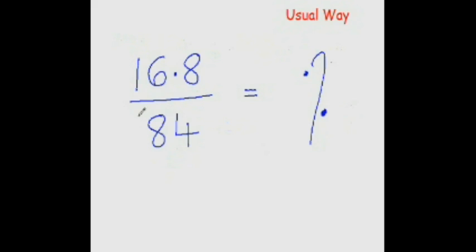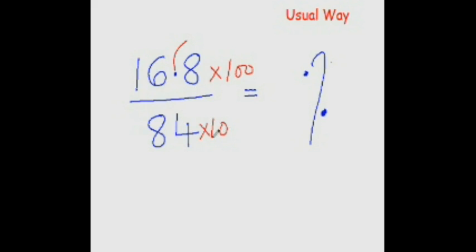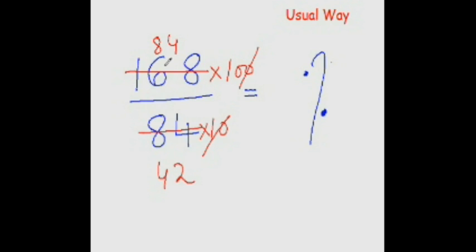The usual way of converting any fraction into a percentage is to multiply it by 100. First, simplify by getting rid of the decimal — multiply the numerator by 10, so the decimal goes away. You also multiply the denominator by 10, because if you multiply numerator and denominator by the same number it makes no difference. Then cancel out the common terms: two fours are eight, two twos are four, two eights are sixteen, two fours are eight.